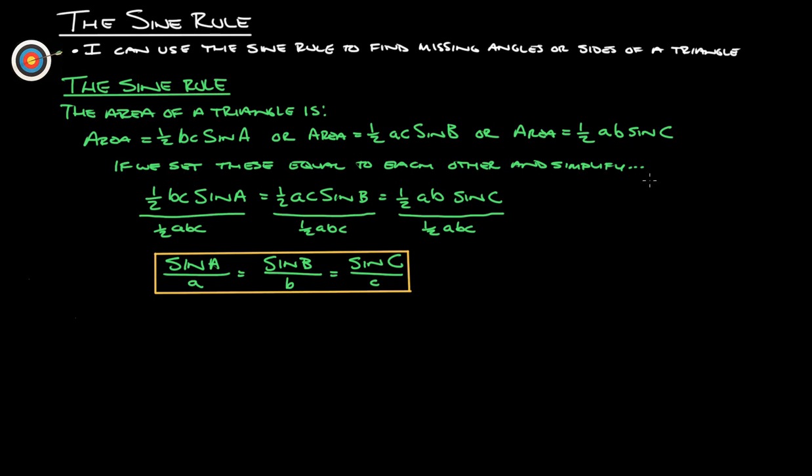If you set all of these equal to each other, which should be true, and then we simplify, we end up with this. So, 1 half BC sine A, 1 half AC sine B, 1 half AB sine C.